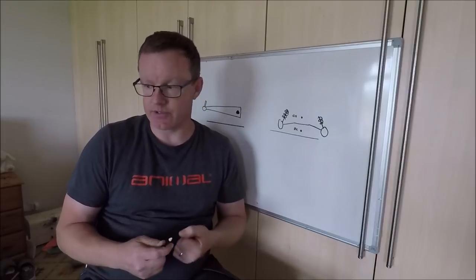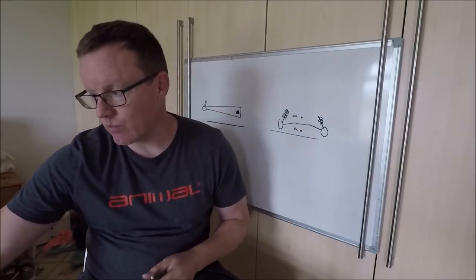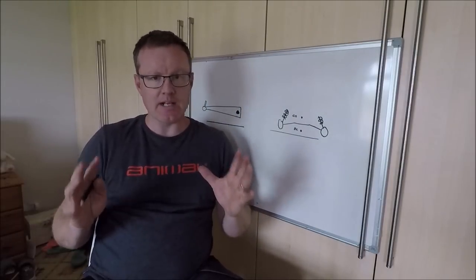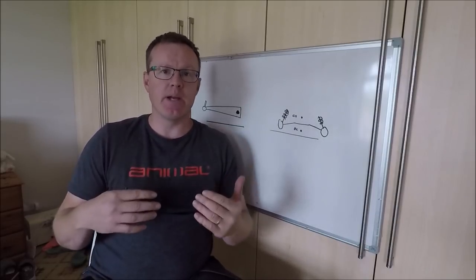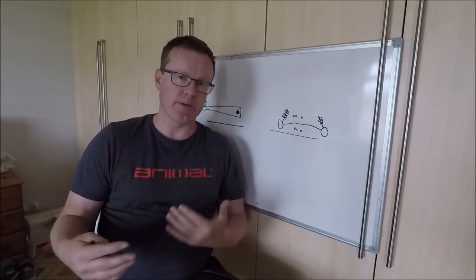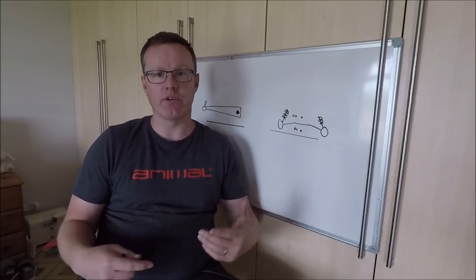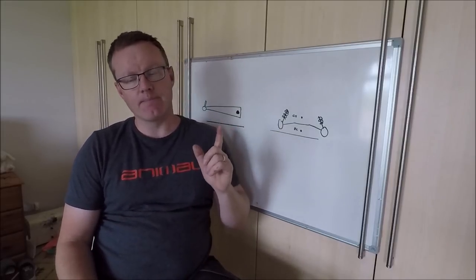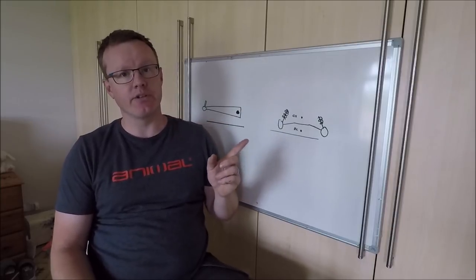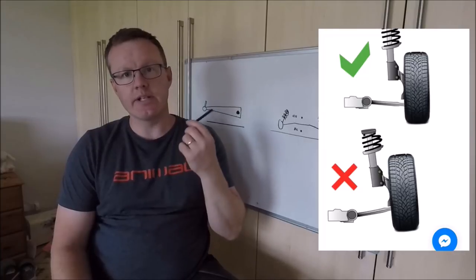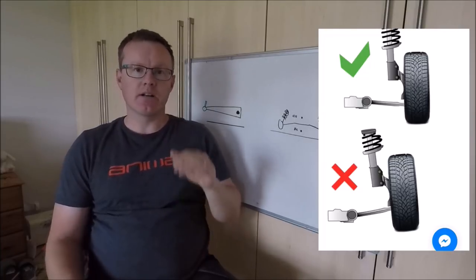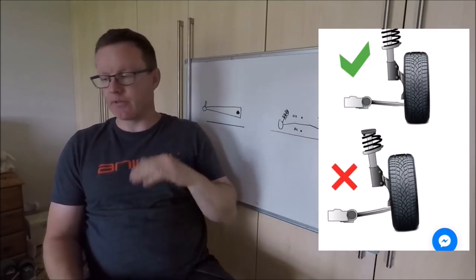The front suspension is MacPherson strut and if you get the geometry wrong on that then you're going to run into understeer issues, and I'm actually suffering that at the moment and I've realized my suspension geometry is a little bit out of whack running the mountain springs. And this is why - if the whole aspect of roll center gets too confusing for you, there's one basic way of looking at whether you've got your suspension right or whether you've got it wrong.